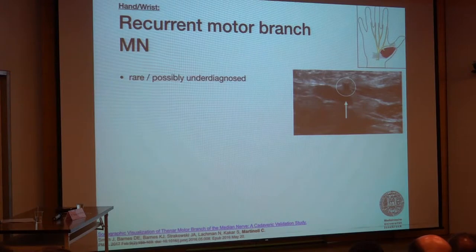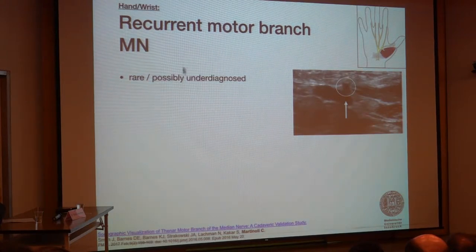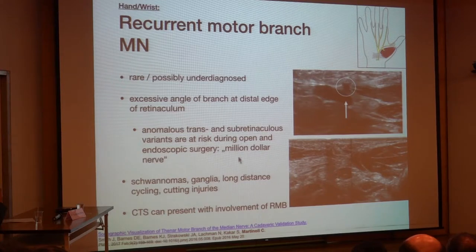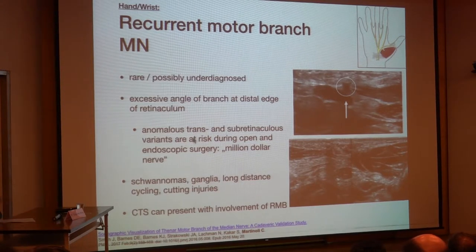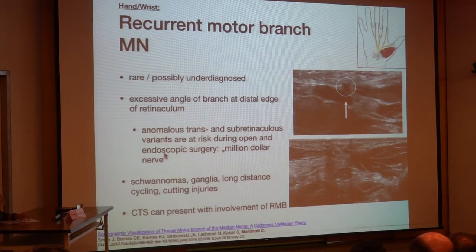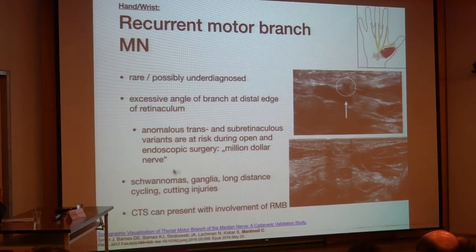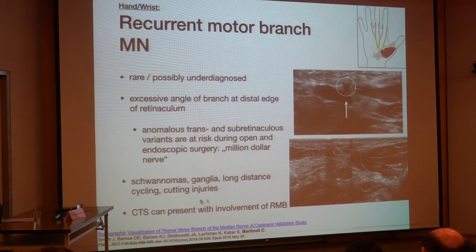Part of the entrapment may also be an affection of the recurrent motor branch, which has been described as rare in the literature but may simply be underdiagnosed. This is due to an excessive angle of this branch at the distal edge of the retinaculum. There are some anomalous courses — it may pass through or under the retinaculum — which can be a challenge for the surgeon or in endoscopic surgery. It has been called the '$1 million nerve' because if affected, it causes a lot of problems. There might also be schwannomas, ganglia, or involvement in long-distance cyclists or due to cutting injuries.